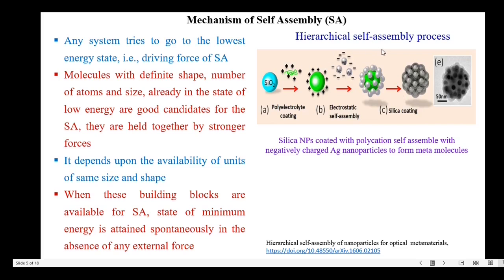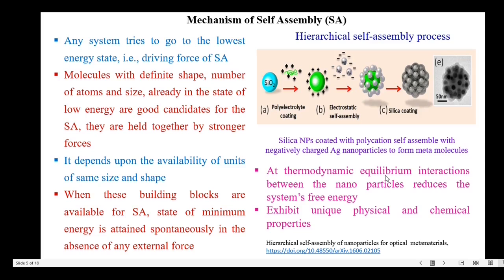Here I have shown the hierarchical self-assembly process. We have silica nanoparticles which are coated with polycation, and it self-assembles with the negatively charged silver nanoparticles to form the metamolecules. Therefore, at thermodynamic equilibrium, interactions between the nanoparticles reduce the system's free energy, which leads to unique physical and chemical properties of the self-assembled system.